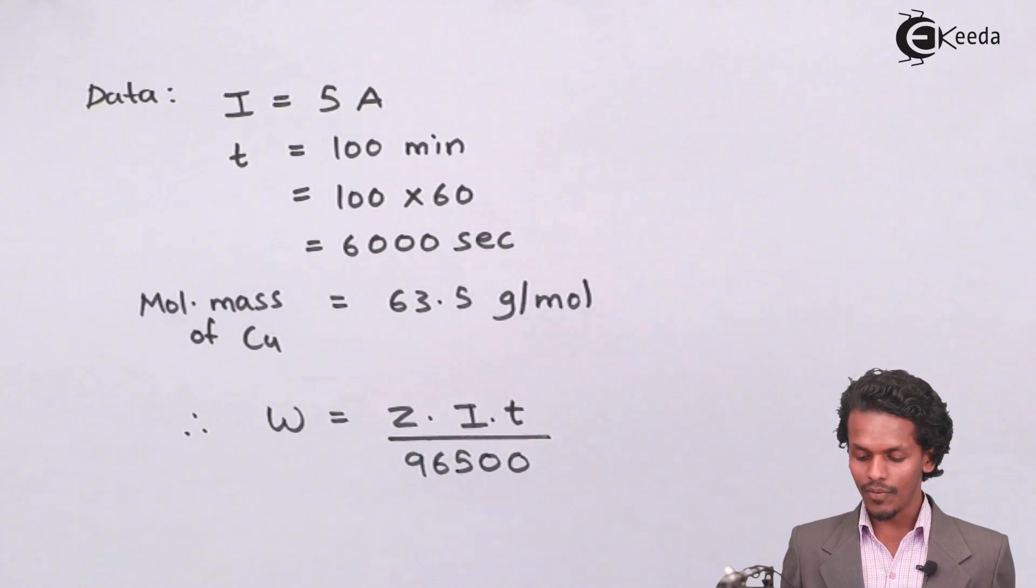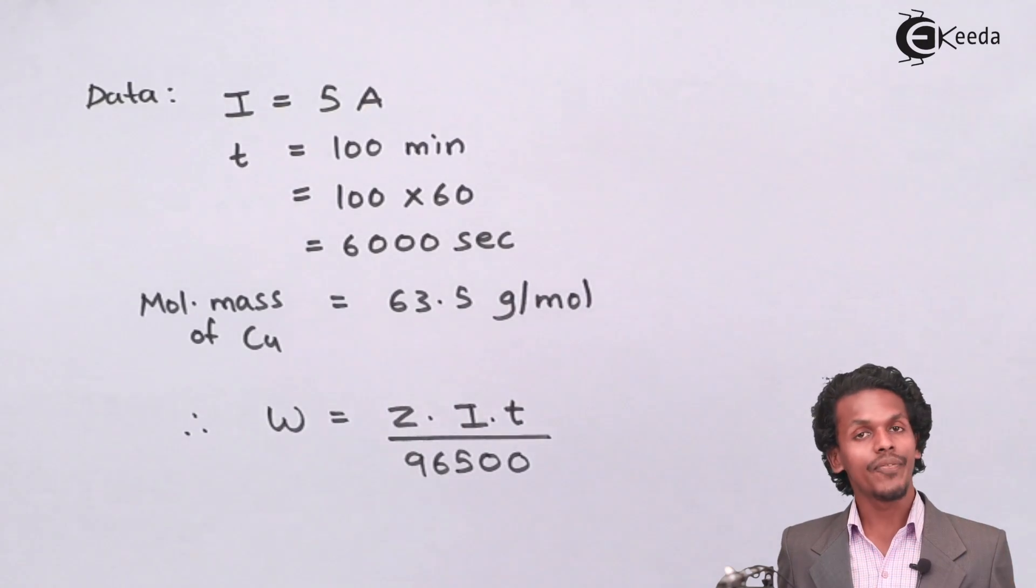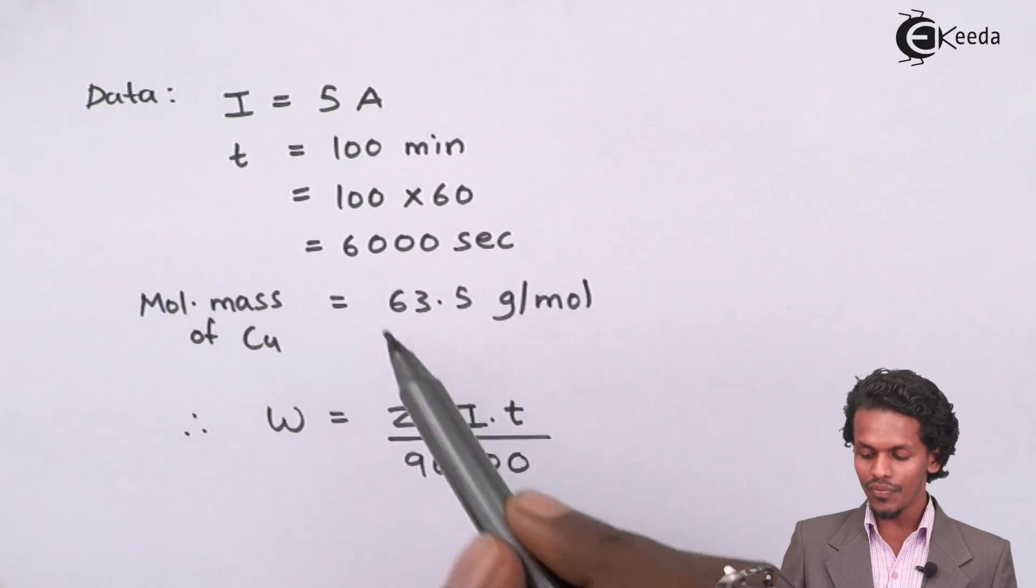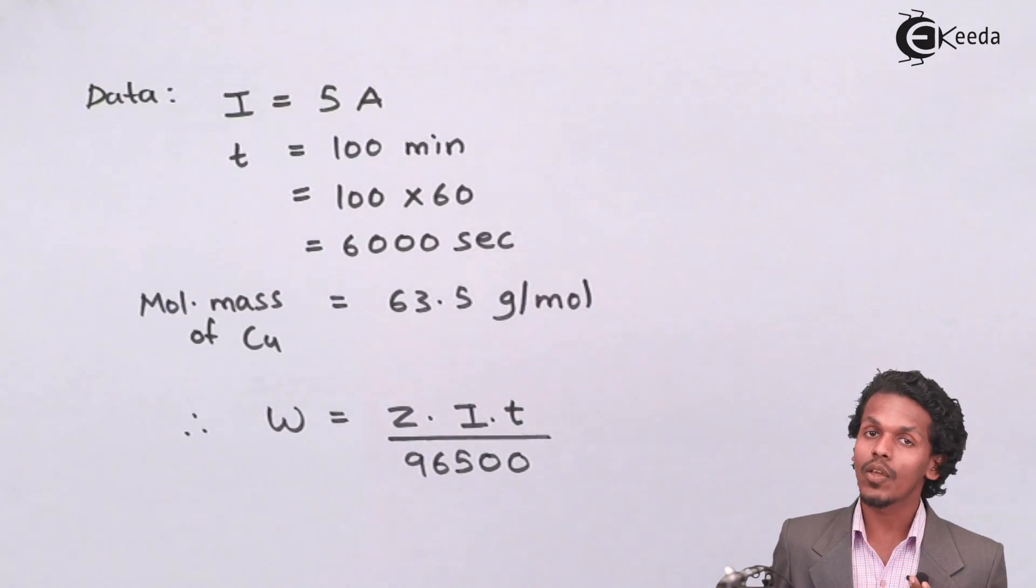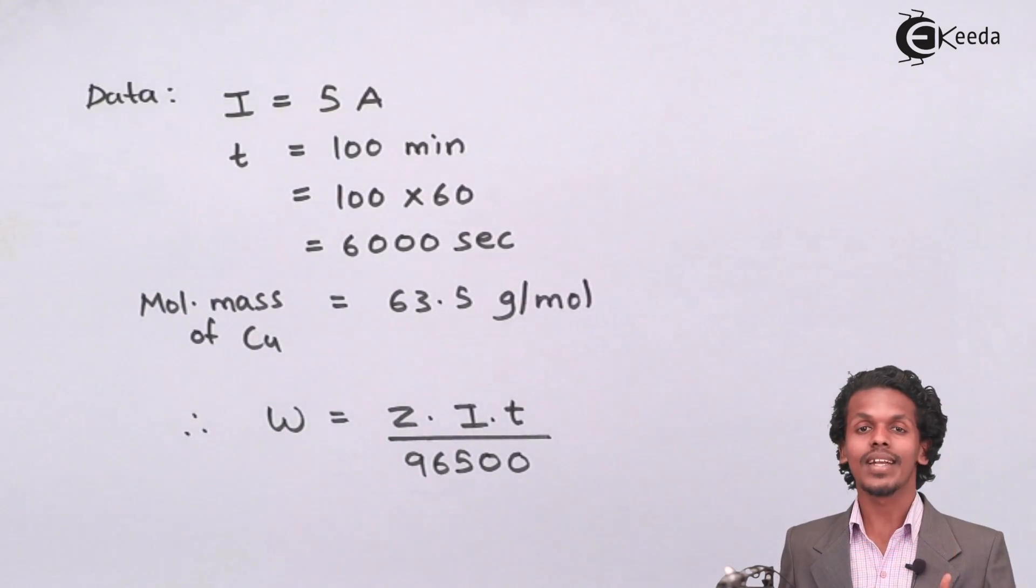We have to estimate the weight of copper that is being deposited. The value of I is known to us, the value of T is known to us, but the value of Z, that is equivalent weight, is not known to us. So how can we calculate this?